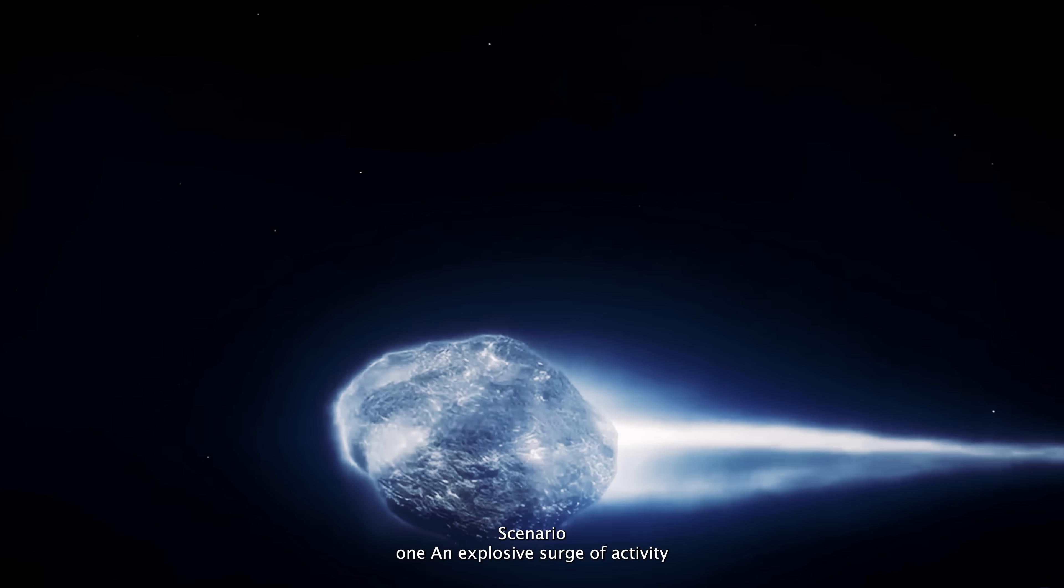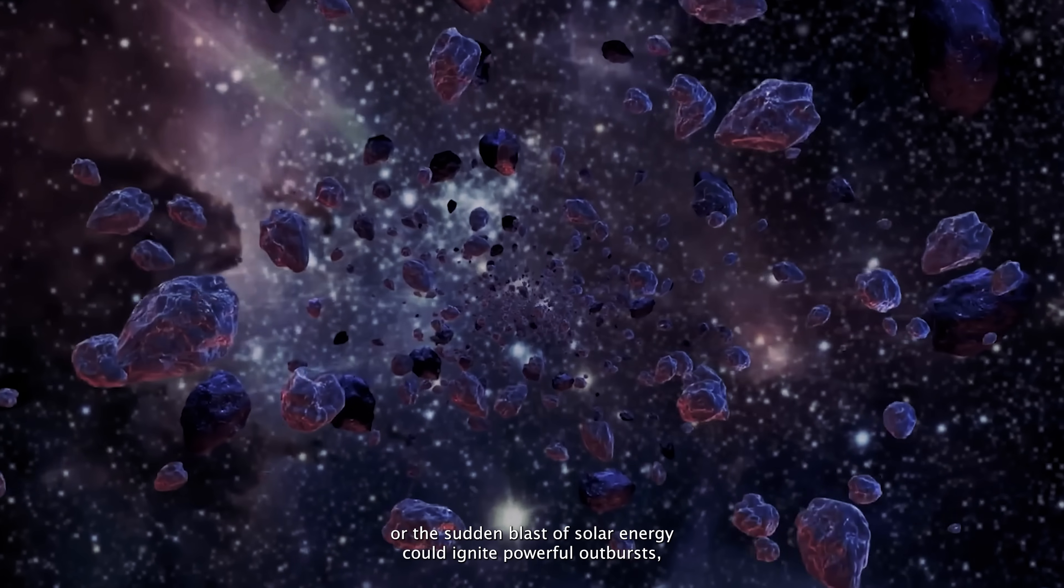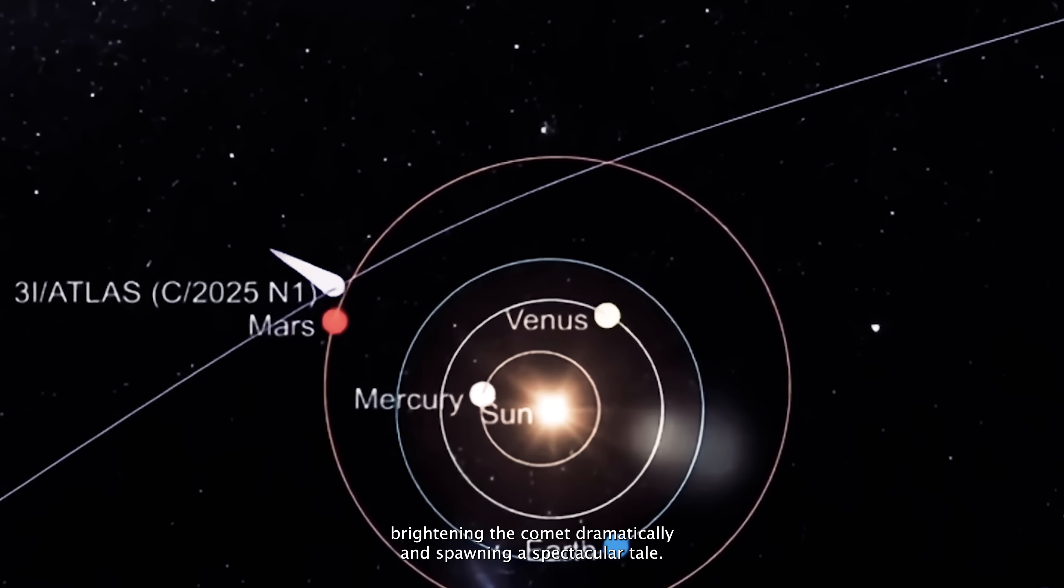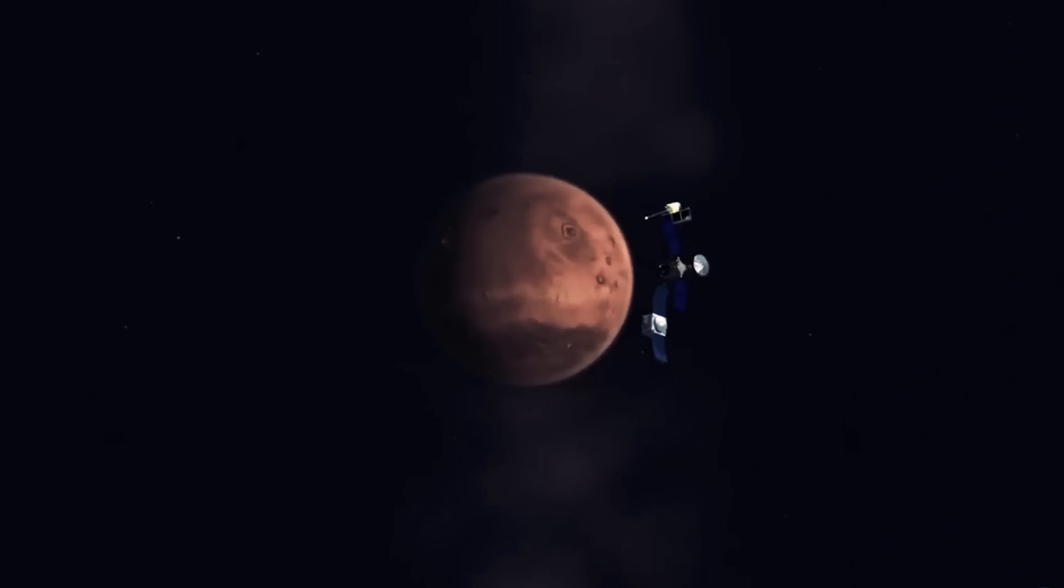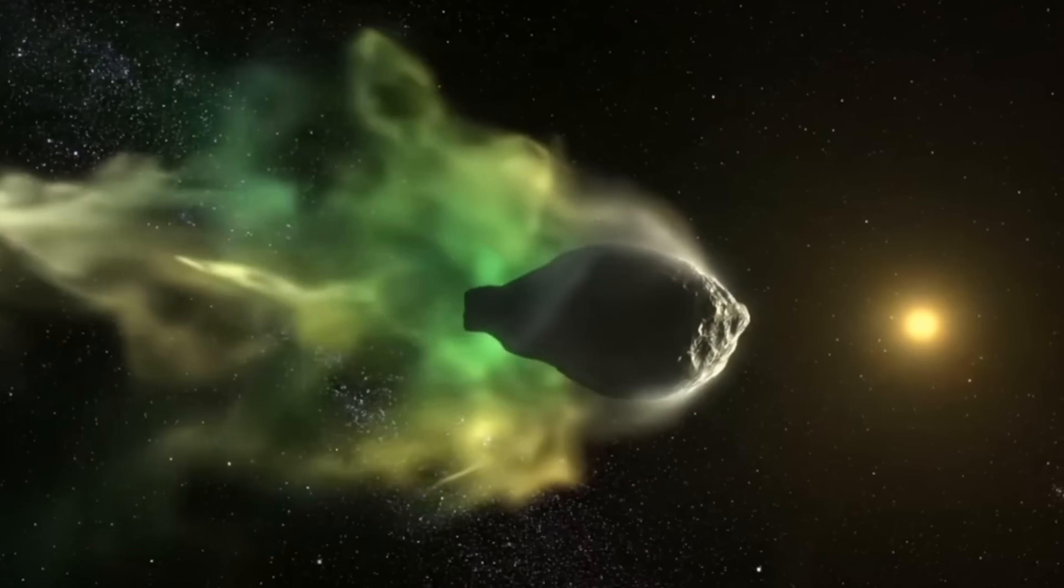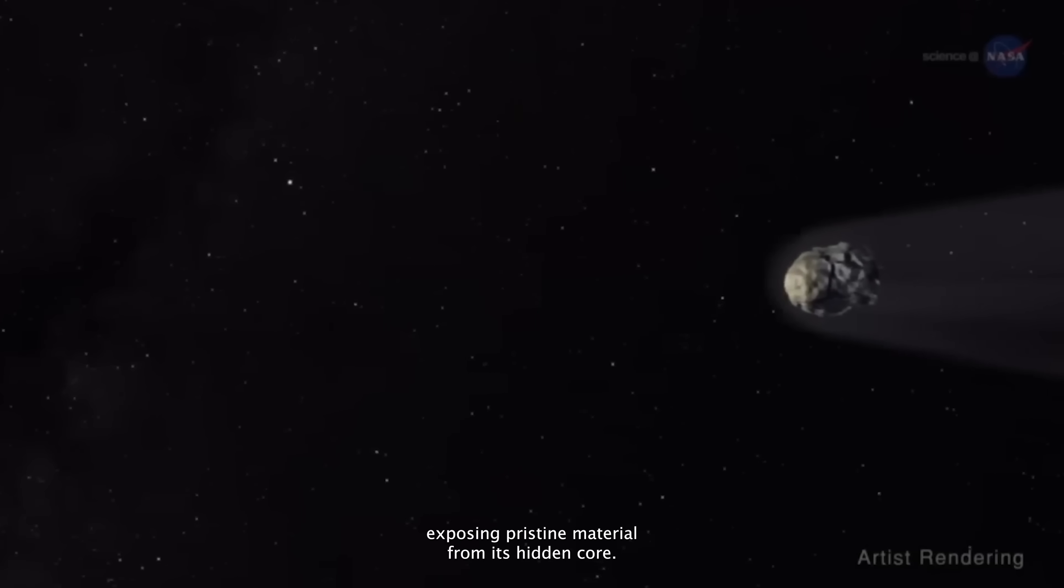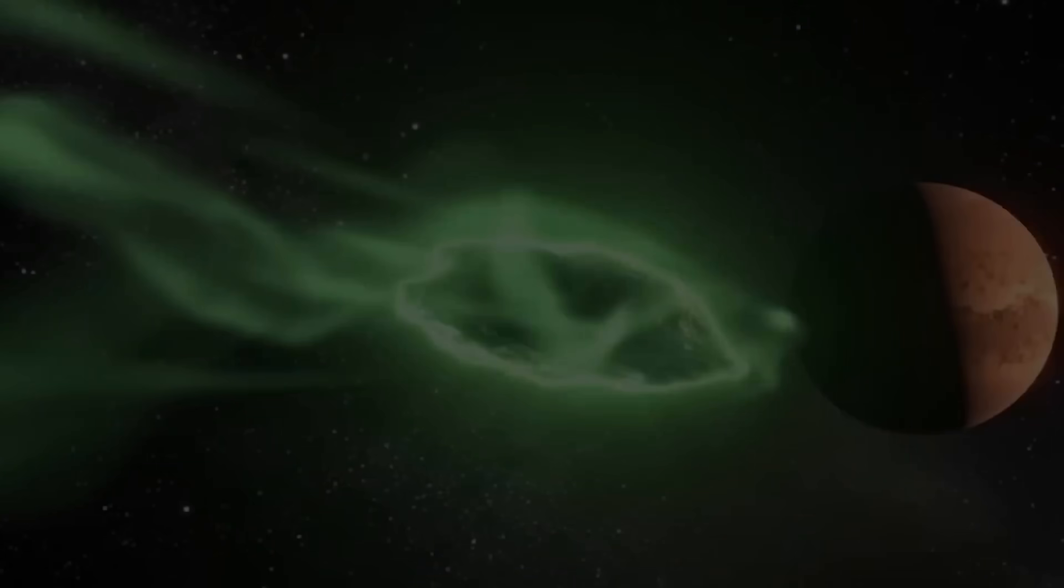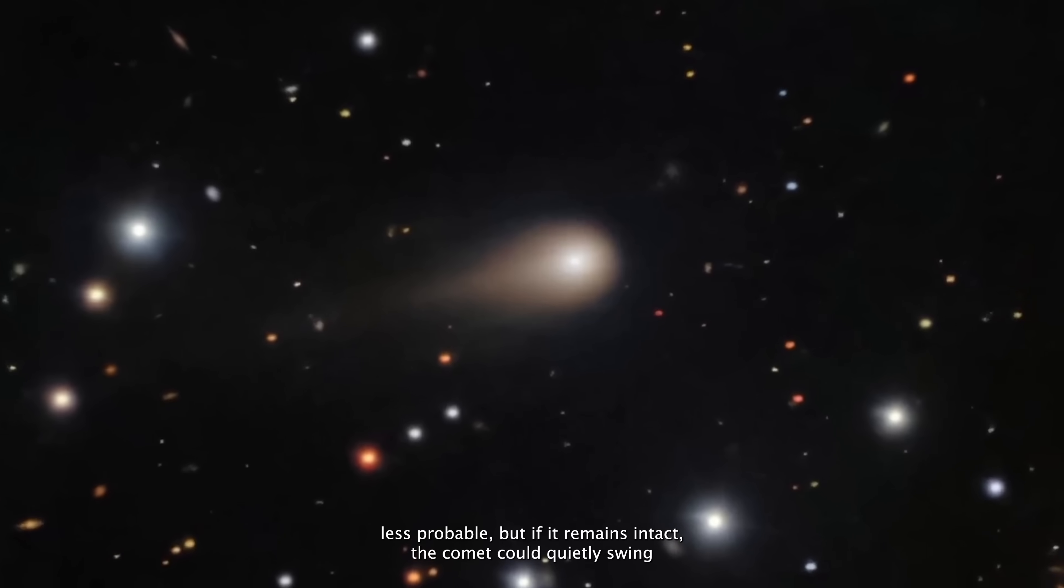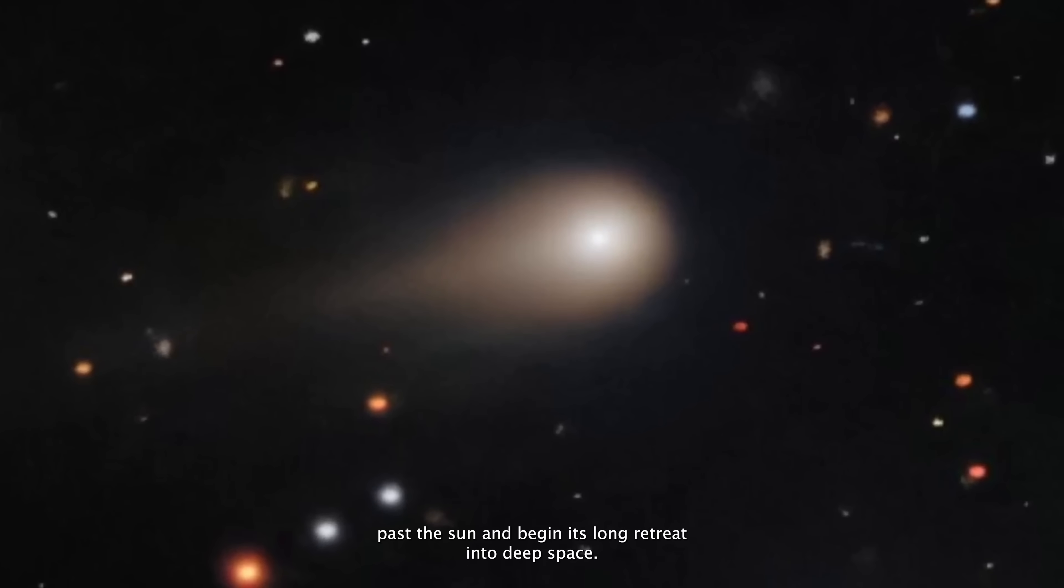Scenario 1, an explosive surge of activity. The sudden blast of solar energy could ignite powerful outbursts, brightening the comet dramatically and spawning a spectacular tail. Scenario 2, fragmentation. Like many volatile-rich comets, 3i Atlas might not survive the stress. Thermal cracking or rapid rotation could tear it apart, exposing pristine material from its hidden core. Scenario 3, a stable passage. Less probable, but if it remains intact, the comet could quietly swing past the Sun and begin its long retreat into deep space.